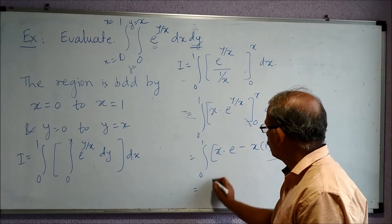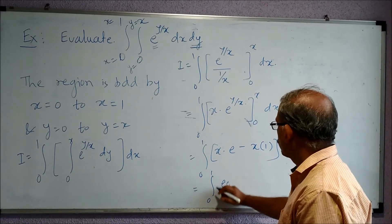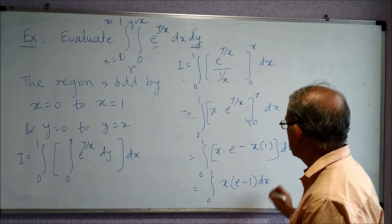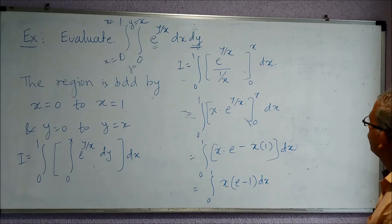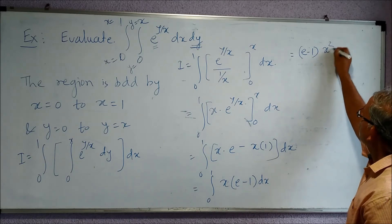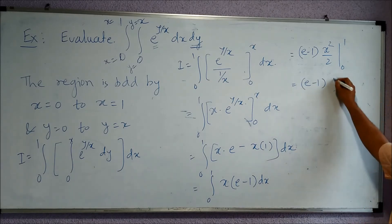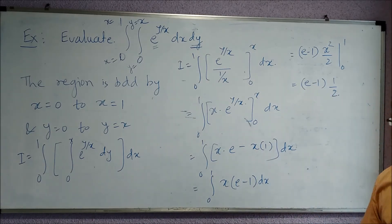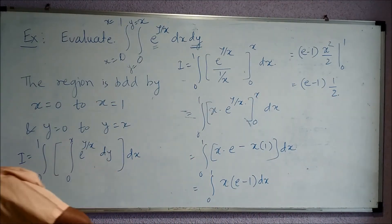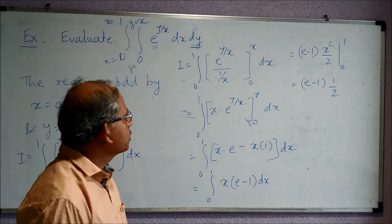So I equals the integral from 0 to 1 of x times (e minus 1) dx. Now e minus 1 is a single constant, so this becomes (e minus 1) times x squared over 2, evaluated from 0 to 1. That gives (e minus 1) times one half. So the value of the integration is (e minus 1) by 2.